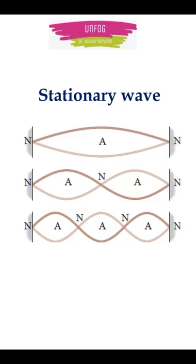In a standing wave on a string, every point moves in simple harmonic motion with the same frequency. Nodes are the points of zero amplitude and antinodes are the points of maximum amplitude.